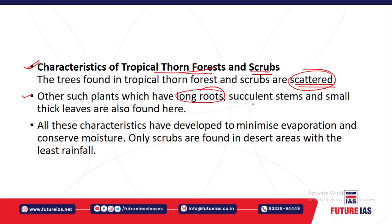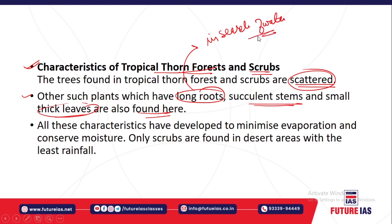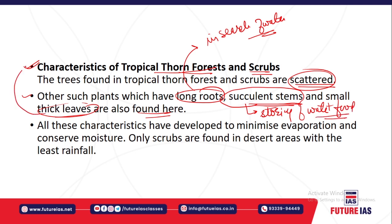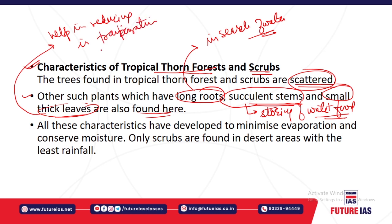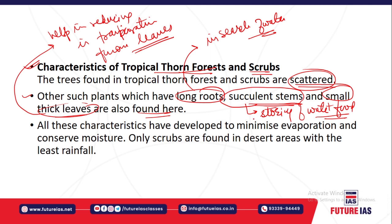Other than plants, you have long roots, succulent stems, and small thick leaves. The long roots go as deep as possible in search of water. The succulent stems help in storing water and food. The smaller thick leaves help in reducing the transpiration rate — reducing transpiration from the leaves.